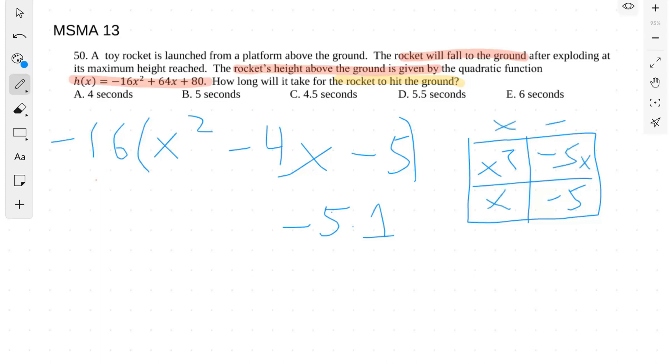And then you have x minus 5 and x plus 1. Those are your factors. So it's negative 16 times (x minus 5) times (x plus 1).